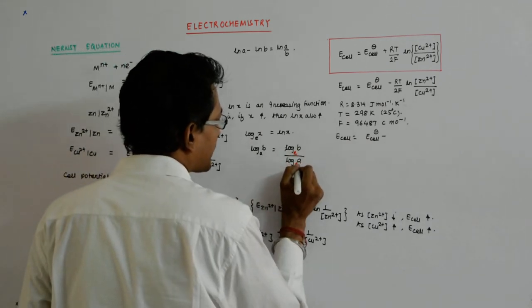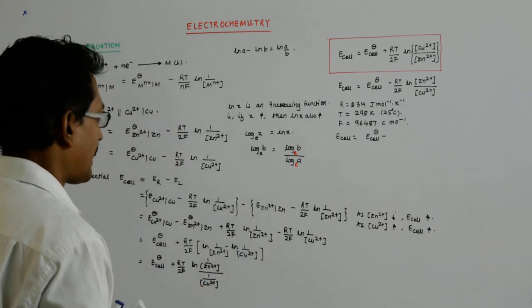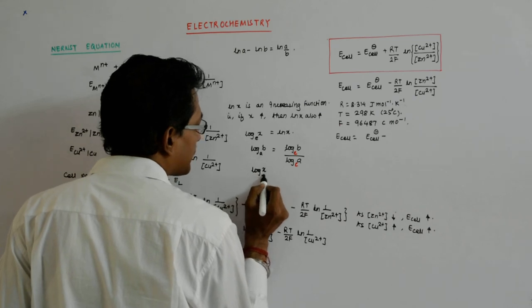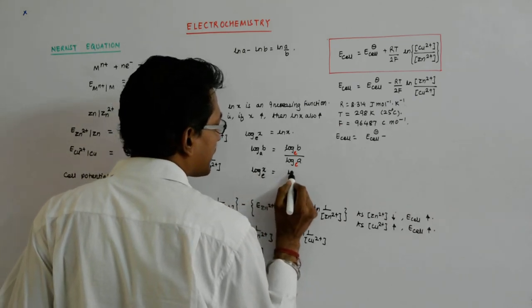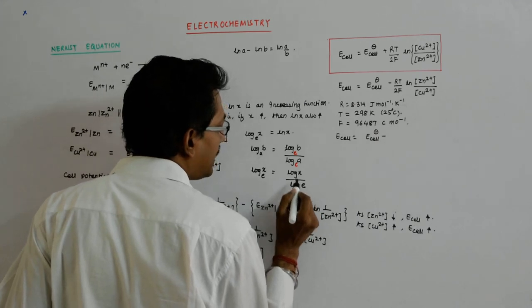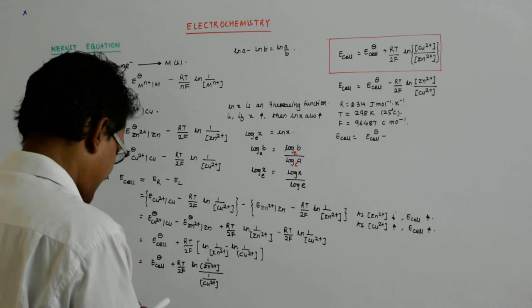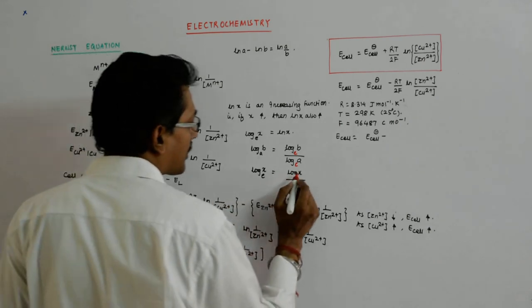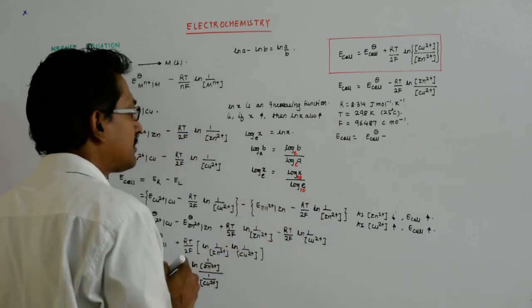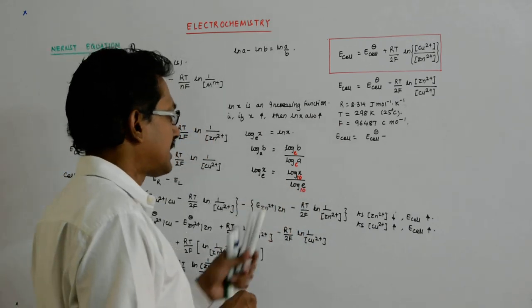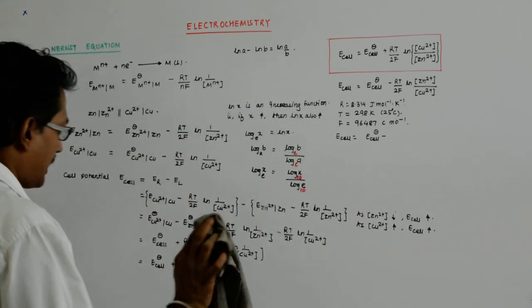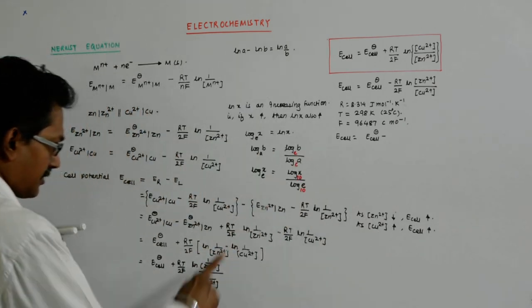So what happens: my log base e can be written as log x upon log e, and I put the base as 10 because the standard logarithmic table has base 10.